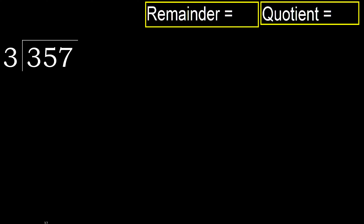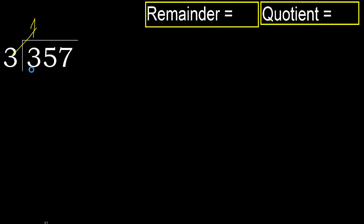357 divided by 3. 3 is not less, therefore with 3: 3 multiplied by which number is nearest to 3 but not greater? 3 multiplied by 2 is 6 — 6 is greater. Multiplied by 1: 3 is not greater. Subtract 3 minus 3 equals 0.